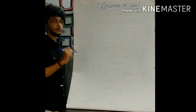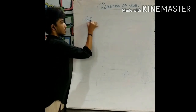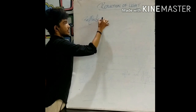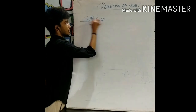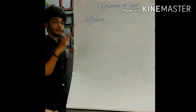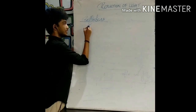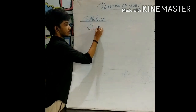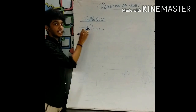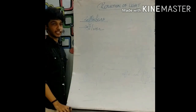Next let us learn what reflectors are. A reflector is an object which has the ability to reflect light. One of the best known reflectors of light is silver. This is a key point to note: a silver mirror is one of the best known reflectors of light.